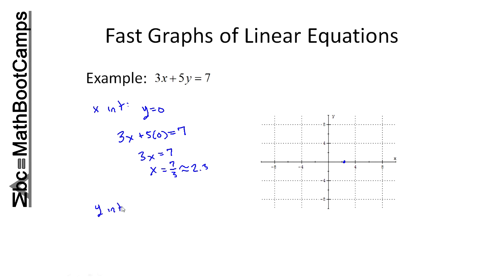Okay, what about the y-intercept? For the y-intercept, I'm going to set x equal to 0. I'm going to have 3 times 0 now plus 5y equals 7. In other words, 5y equals 7 and y is 7 over 5. 7 over 5 is approximately 1.4 and again, the way I found that was I put it in my calculator. I did 7 divided by 5.